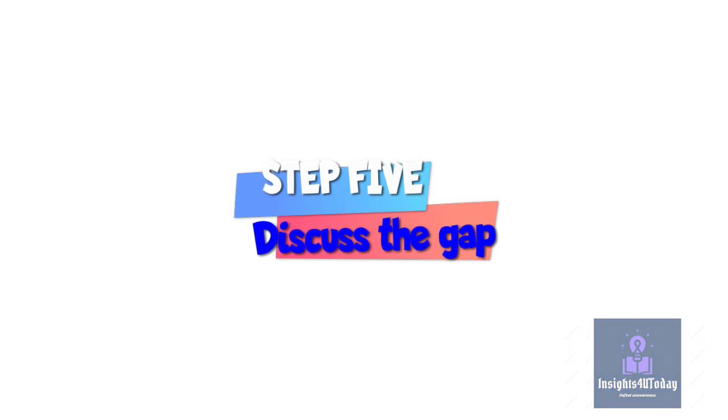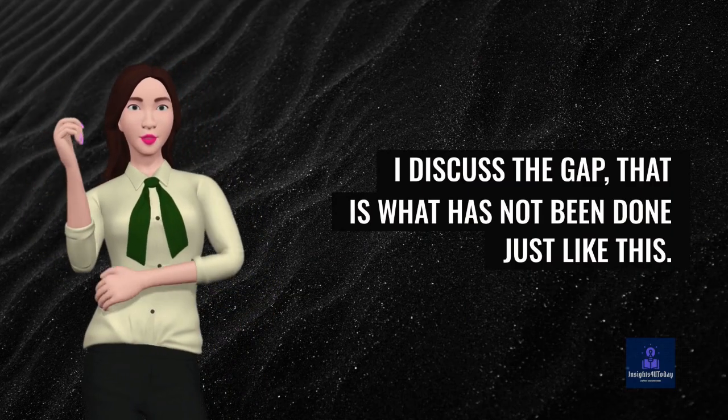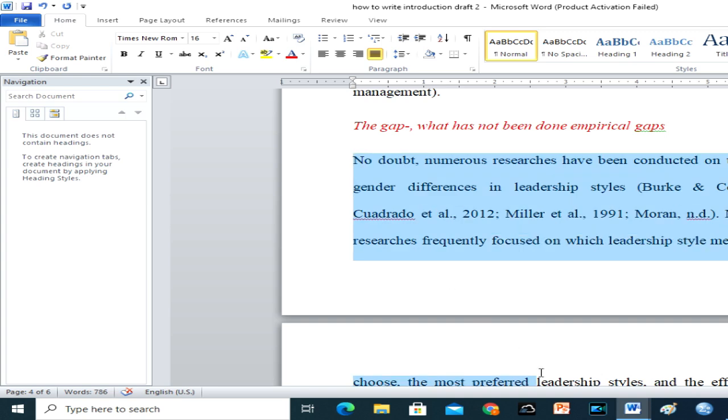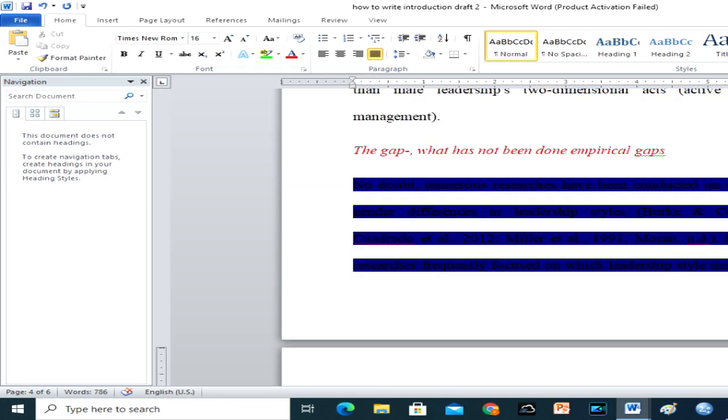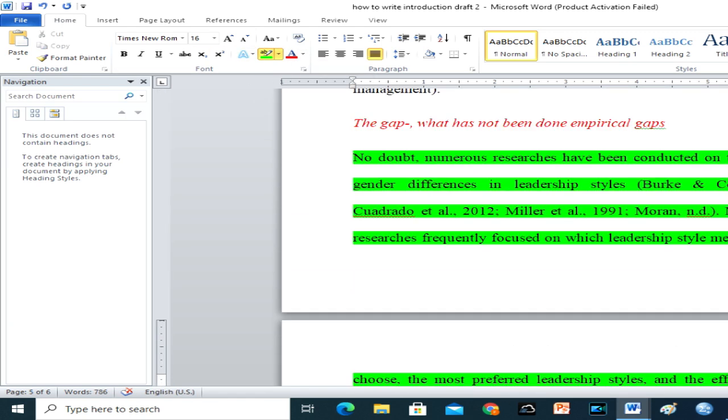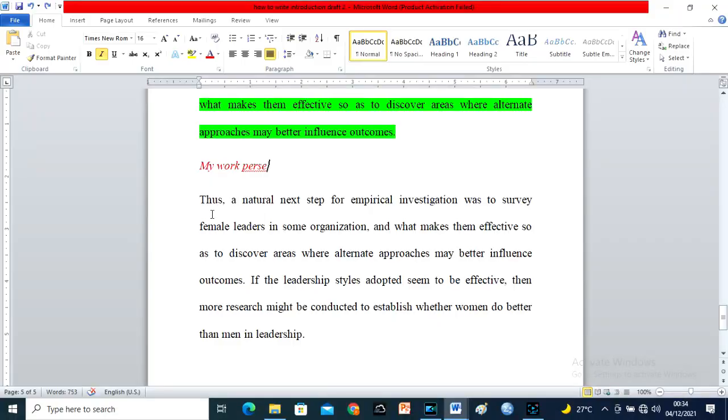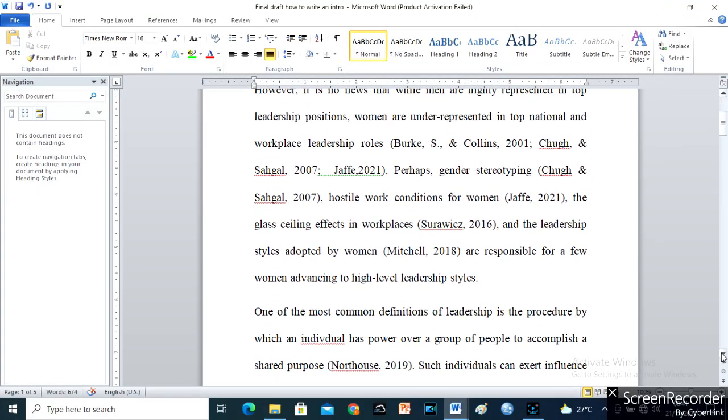Step 5. I discuss the gap, that is what has not been done just like this. Then, I conclude by stating my topic or overall objective stylishly, just like this, and my background to the study is perfect.